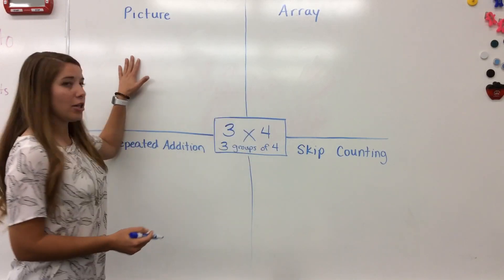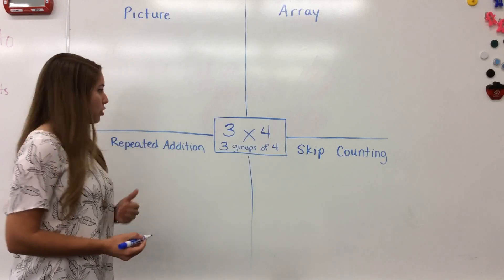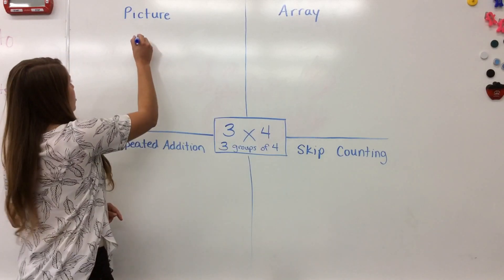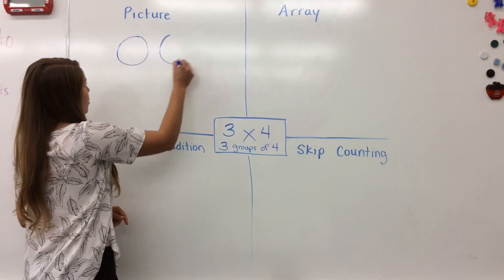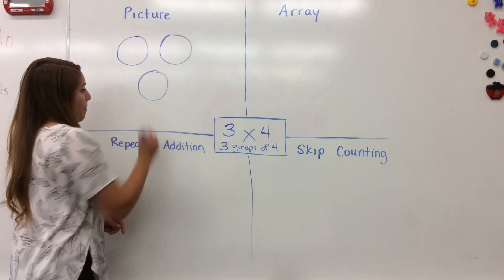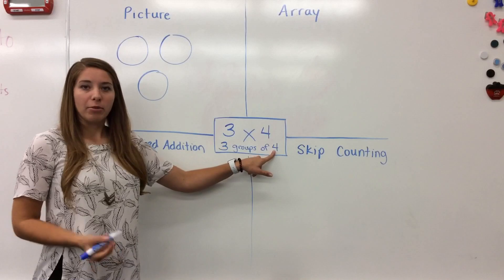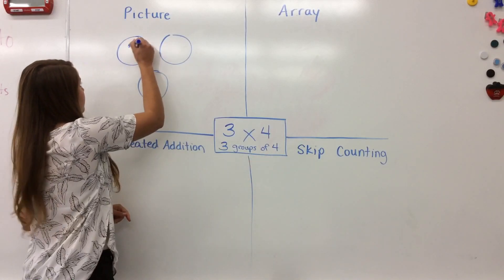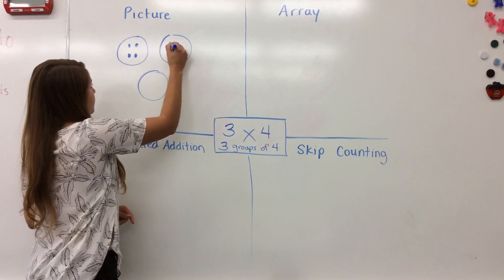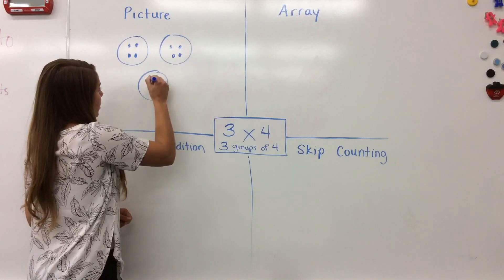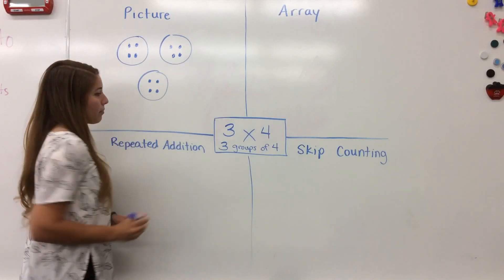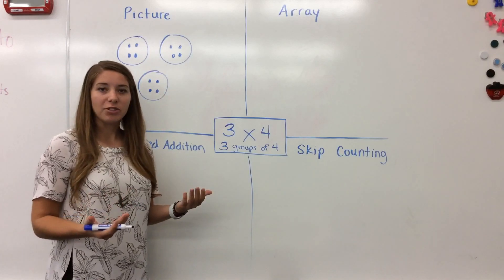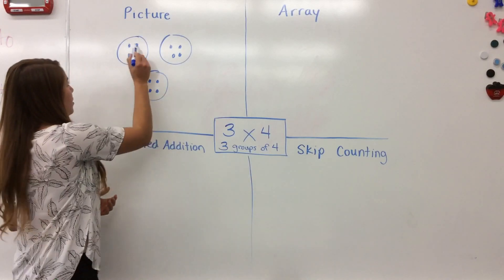The first strategy we teach third graders is to make a picture. What I'm going to do is start by drawing my three groups — I'm just going to draw three big circles. And then inside each circle I'm going to put four dots. Once I have my three groups of four, to find my answer, all I need to do is count.